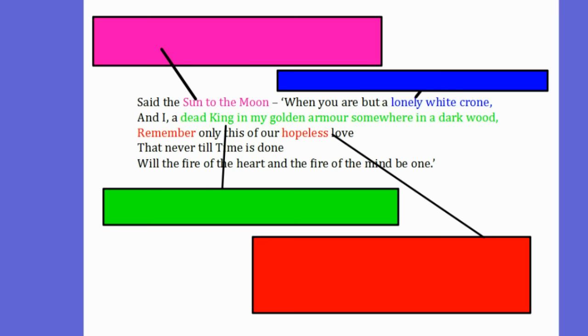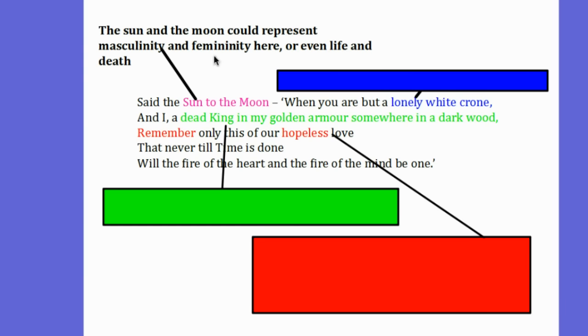It's interesting that we have this sun now talking to the moon. Now they could represent different things. The sun and the moon could represent masculinity and femininity. Or even life and death.